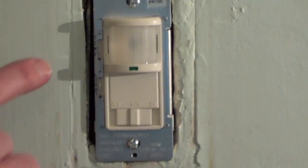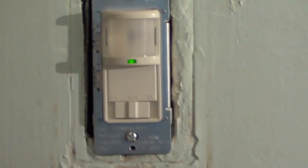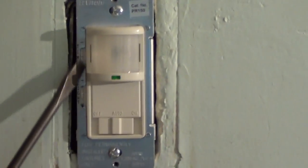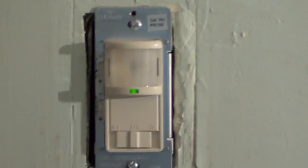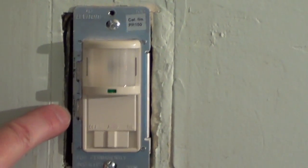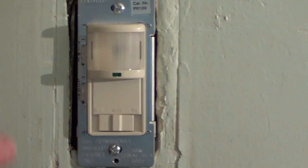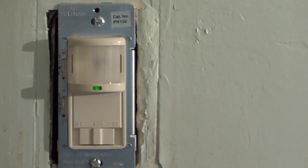So for this model we have two settings. We have a time setting and you just use a screwdriver and you rotate this little control to plus or minus and you can have it go from a minute all the way up to 15 minutes and then it'll shut itself off. And then you also have sensitivity here depending on the light levels so you can make it more sensitive or less sensitive.